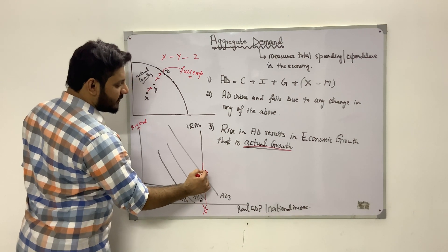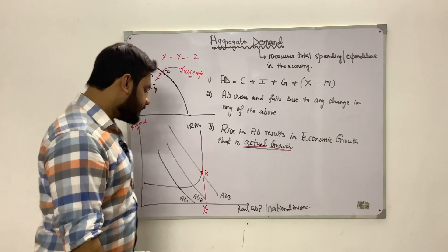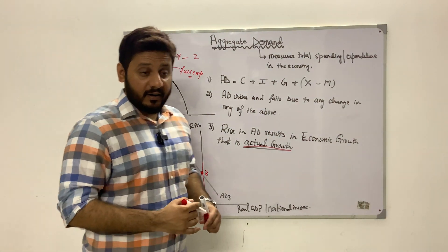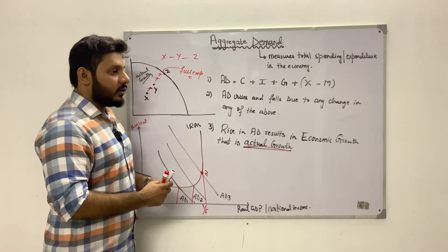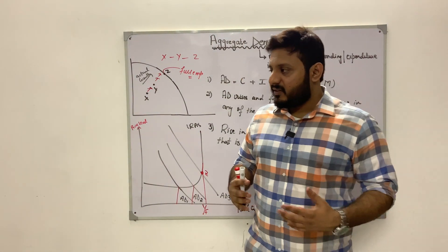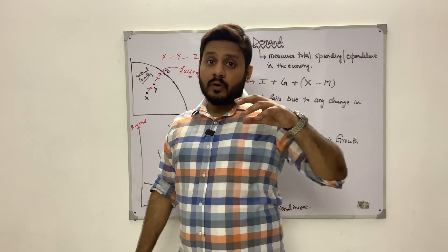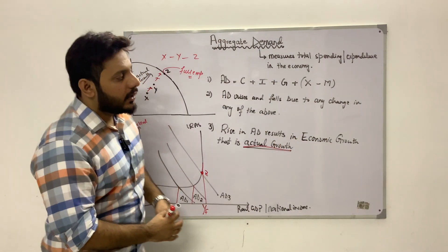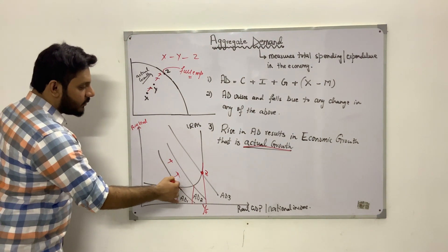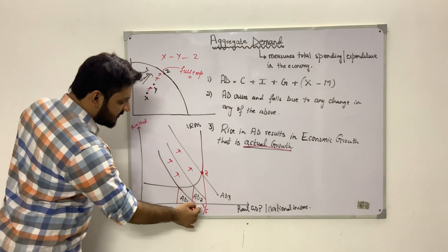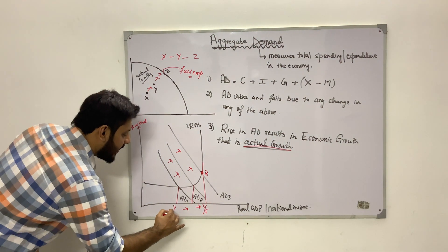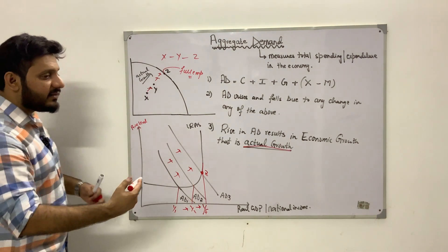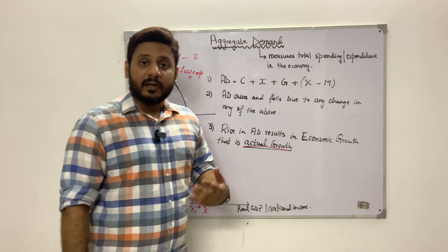This point is labeled Z, corresponding to point Z on the macro PPC curve. The Keynesians said that in the short run, the aggregate supply curve is perfectly elastic — meaning whenever there is idle capacity or existing resources in the economy, the economy can respond to an increase in aggregate demand shifting from AD1 to AD2 to AD3. Real GDP rises from Y1 to Y2 and then to YF, which represents the full employment level of national income.